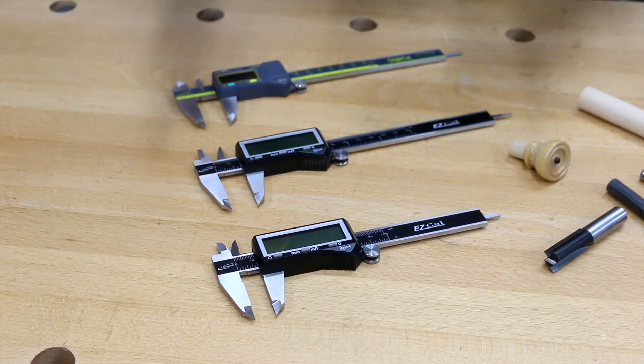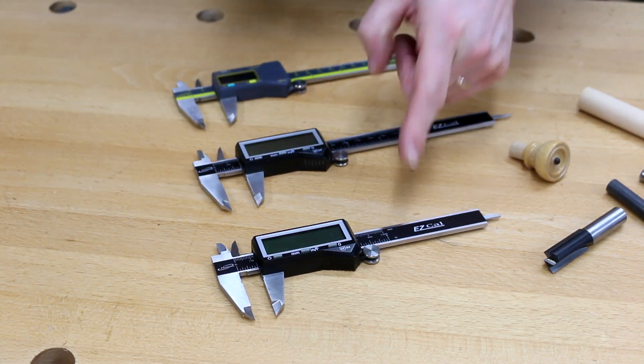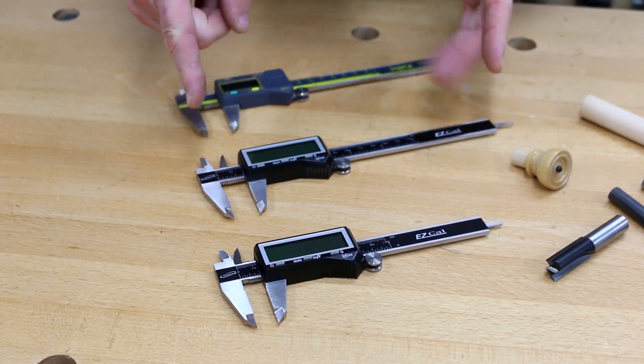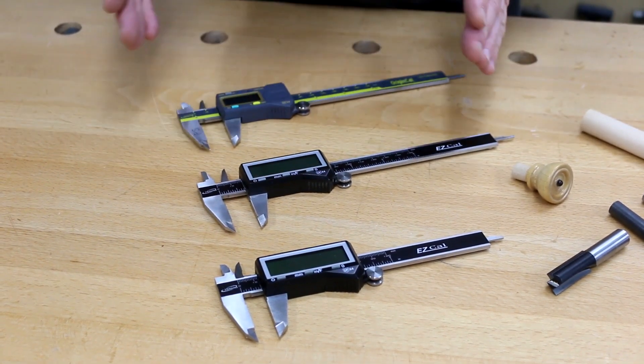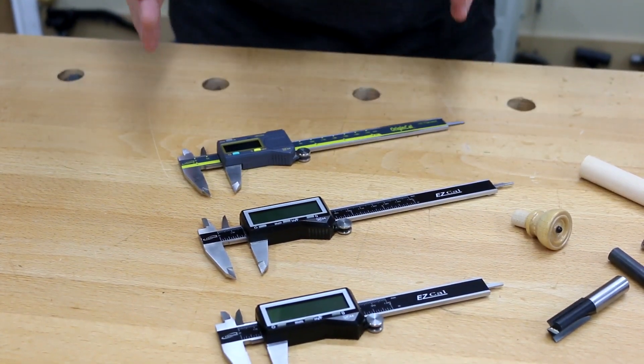The iGaging we've got: the 100 millimeters or four inch Easy Cal, the 150 mil or six inch Easy Cal, and the original Cal which is also 150 mil or six inches. The two Easy Cals both have the same functionality, smallest one being the 100 millimeters or four inches.